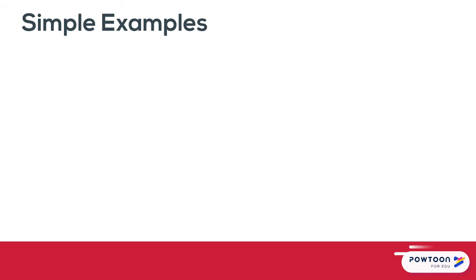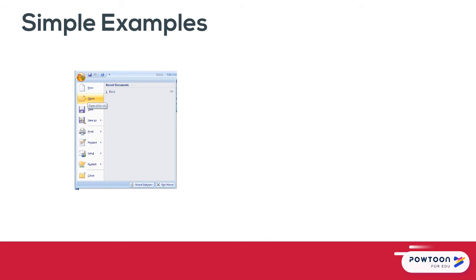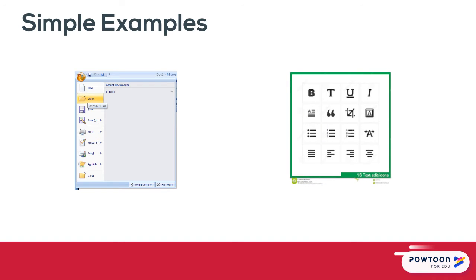Some examples of very simple uses of transfer in technology include the fact that most programs can access a file menu, and most word processing programs have universal symbols for bold, italic, underline, etc.